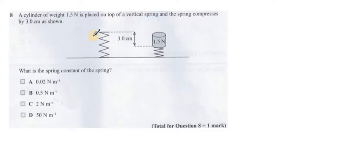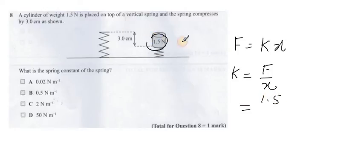Question number 8. A cylinder of weight 1.5 Newton is placed on top of the vertical spring and the spring compressed by 3 cm. What is the spring constant? The relation between the spring constant and the force is F equal K X, and X is the extension. So K is equal to force over extension. Force is 1.5, divided by extension 3 cm. Don't forget to change cm into m divided by 100, it will give you 0.03. If you divide these, K will give you 50. That means your answer for K is 50 Newton per meter. Option is B.